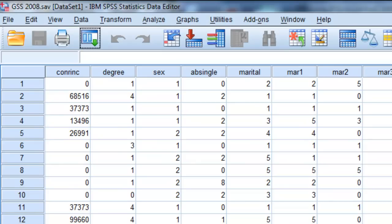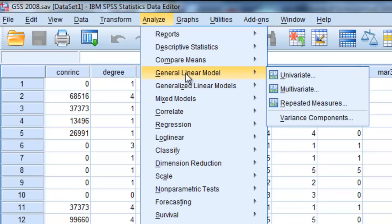This is my SPSS data file. Again, you can download this from the GSS website. And to conduct this analysis, I am going to go to Analyze, General Linear Model, and I will select Univariate.